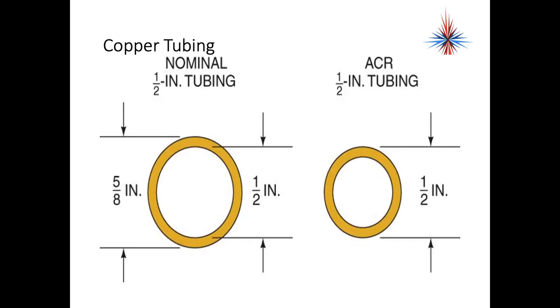When we look at copper tubing, a half inch nominal tubing is actually five-eighths inch ACR. It's the same tubing, it's just measured in two different ways. Half inch ACR tubing actually fits inside half inch nominal tubing.